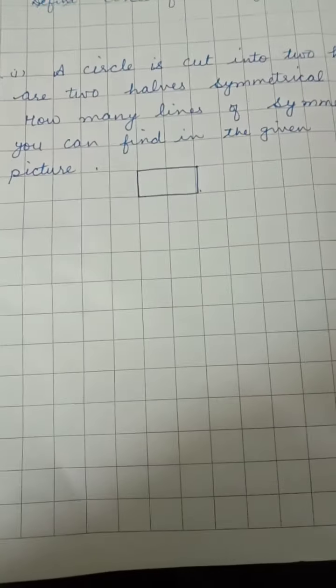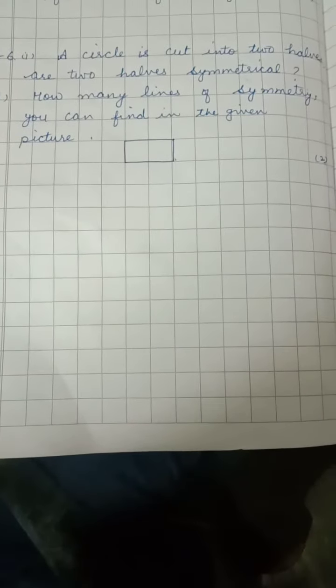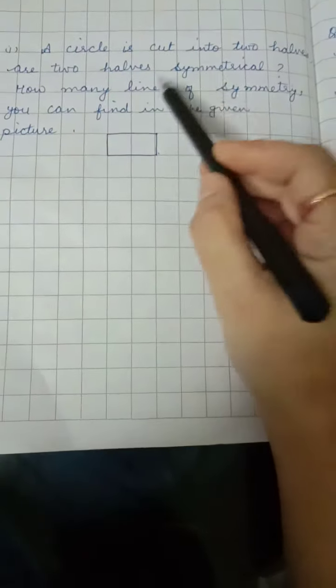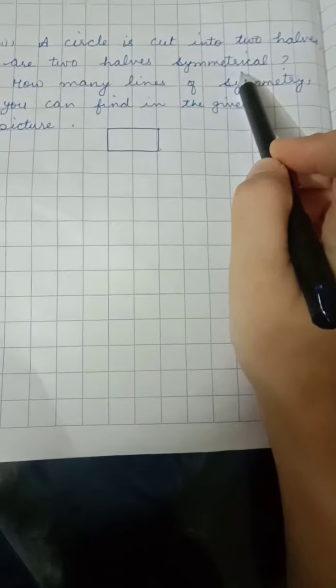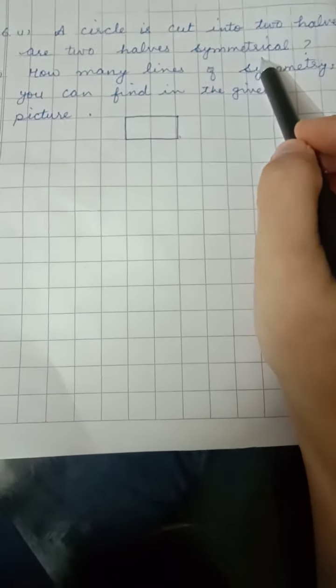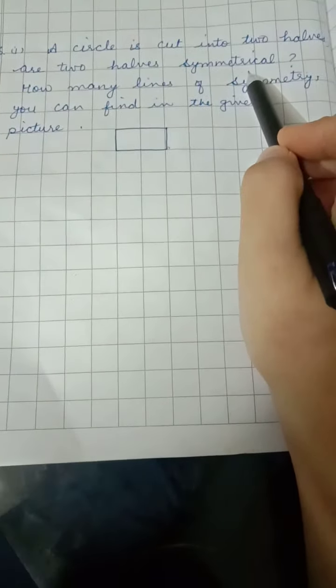Question number 6: A circle is cut into two halves. Are two halves symmetrical? You have to write if a circle is cut into two halves, are the two halves symmetrical or not?